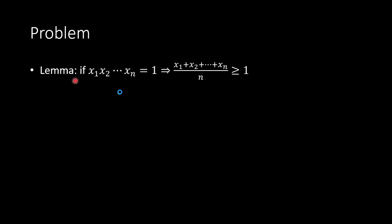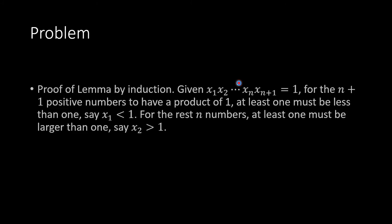In order to do that, we need to establish a lemma. The lemma places constraints on n numbers: if x1 · x2 · ... · xn = 1, then we want to show that the average (x1 + x2 + ... + xn) / n is larger than or equal to 1.